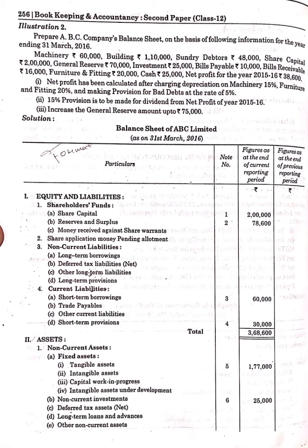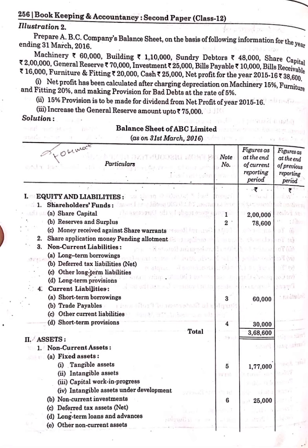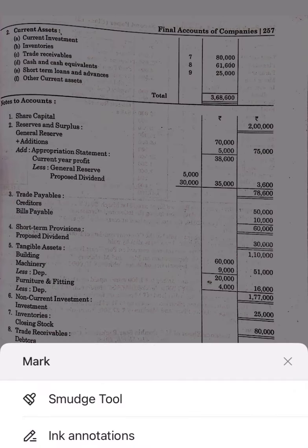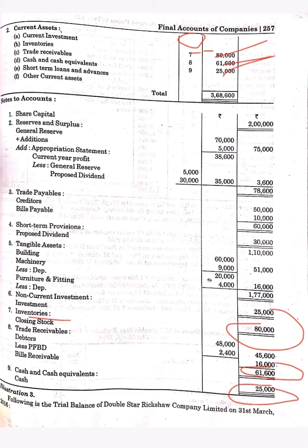Then assets — fixed assets, tangible assets, note number five: 1,77,000. Note six: non-current investments — investment was 25,000. Note seven: 80,000. Note eight: 61,600. Note nine: cash and cash equivalents — 25,000. Now just total the assets and liabilities separately and we will get equal answers. That was the question of the balance sheet.